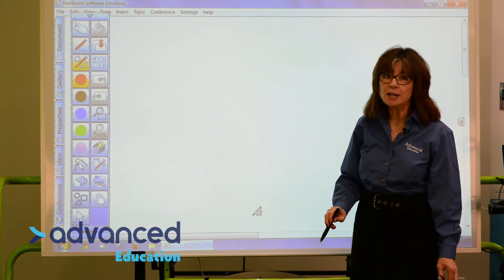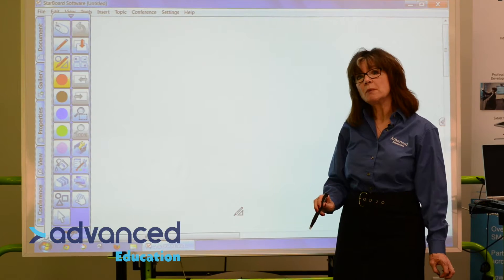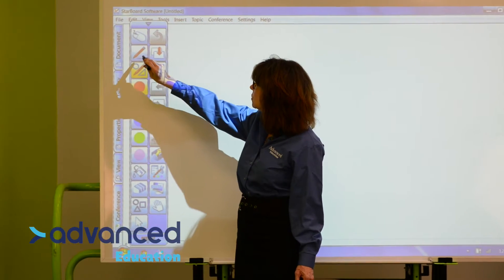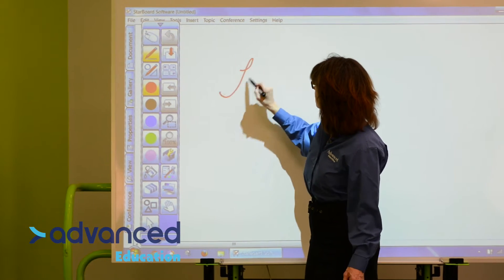So now we've got a menu that you can see better. Now the first thing you might want to do is just write on your surface. So I'm going to choose the pen. And I can write, hello.